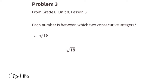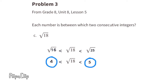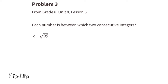Part c: the square root of 18. The number that represents the square root of 18 would fall somewhere between the square root of 16 and the square root of 25, because 4 times 4 equals 16 and 5 times 5 equals 25. So the square root of 18 falls somewhere between 4 and 5.